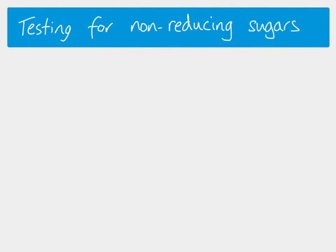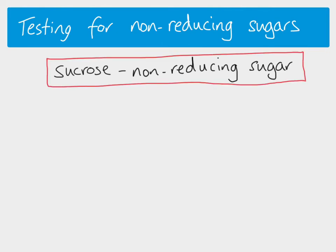What about testing for a non-reducing sugar? Remember, sucrose is a non-reducing sugar. If we add sucrose to Benedict's reagent and heat it at 80°C, it stays blue — that's a negative result, because sucrose cannot reduce the copper ions. So if you had an unknown solution, did the Benedict's test, and it stayed blue, that tells you there are no reducing sugars present — but how do you know if there is a non-reducing sugar? You have to take another step.